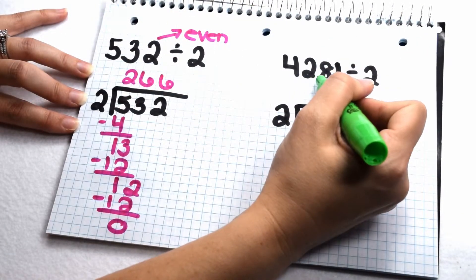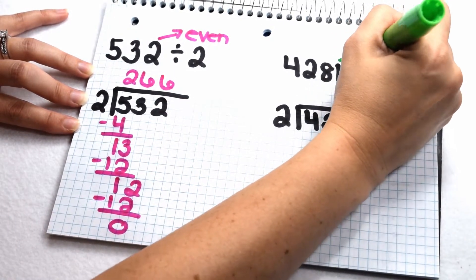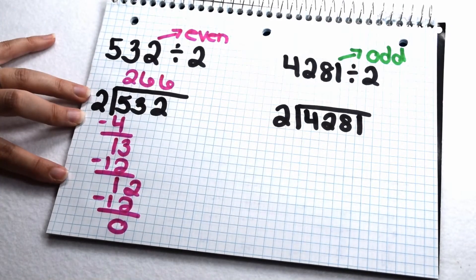In our second example, we have 4,281 divided by 2. 4,281 ends in 1, which is an odd value. That means we should get a remainder when we divide by 2.